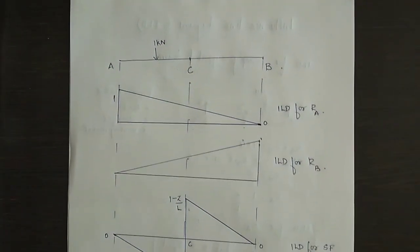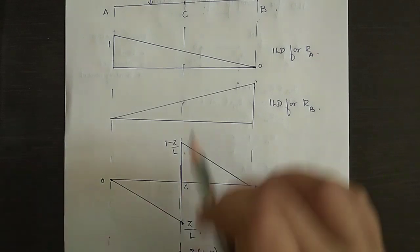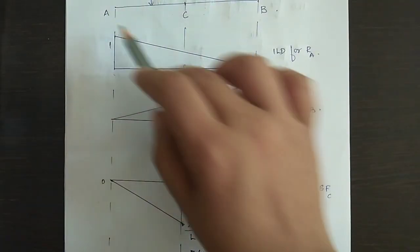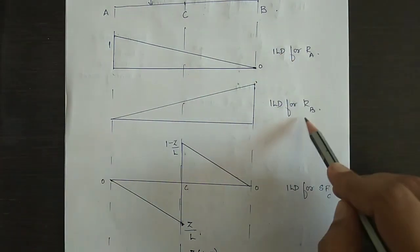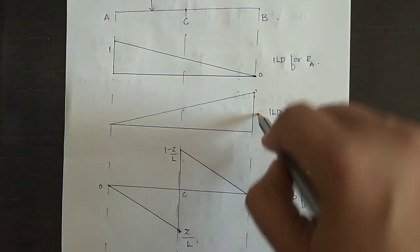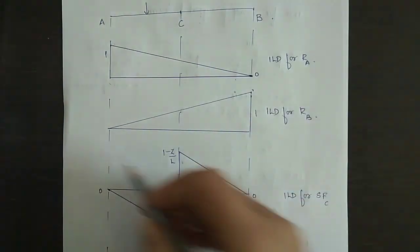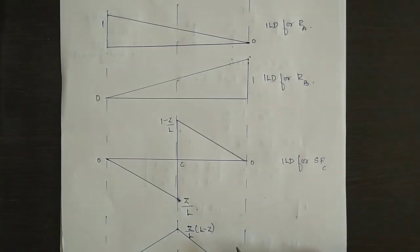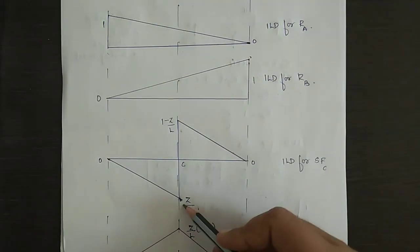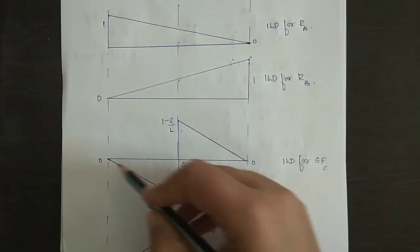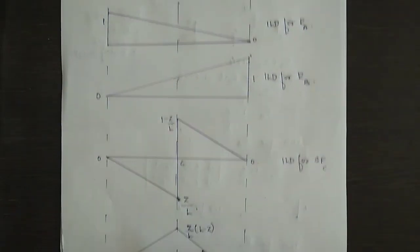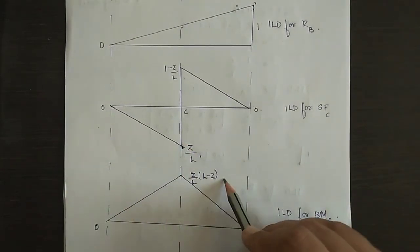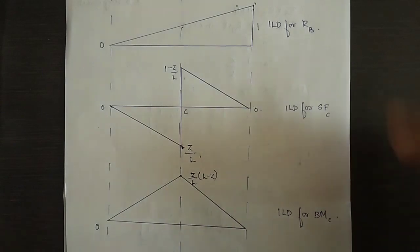Consolidating all ILDs onto a single page: The ILD for RA has value 1 at A and 0 at B. The ILD for RB has value 0 at A and 1 at B. The ILD for shear force at C has two values at the section: minus Z by L on the left side and 1 minus Z by L on the right side. The ILD for bending moment has peak value Z by L into (L minus Z) at the section.